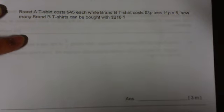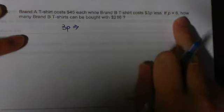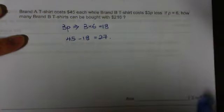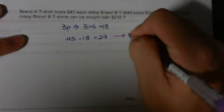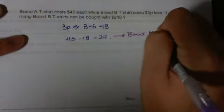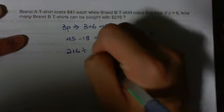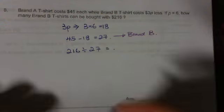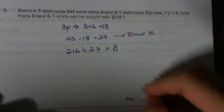First, I have to find out how much less is 3p. So, 3p is simple. I know it is 6. So, 3p, 3 times 6 equals 18. How much does a brand B t-shirt cost? $45 minus 18 equals 27. So, each brand B t-shirt costs $27. Last step. 216 divided by 27 equals 8. I can buy 8 shirts exactly.